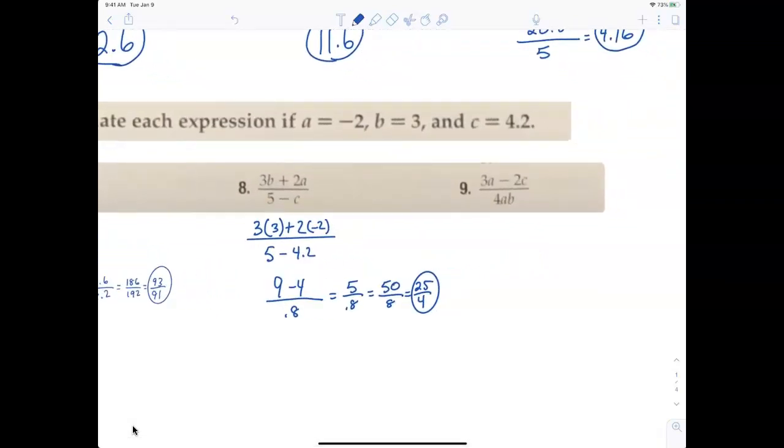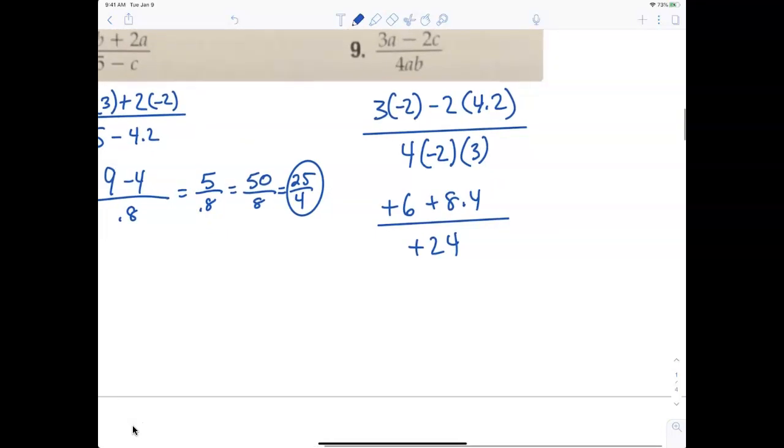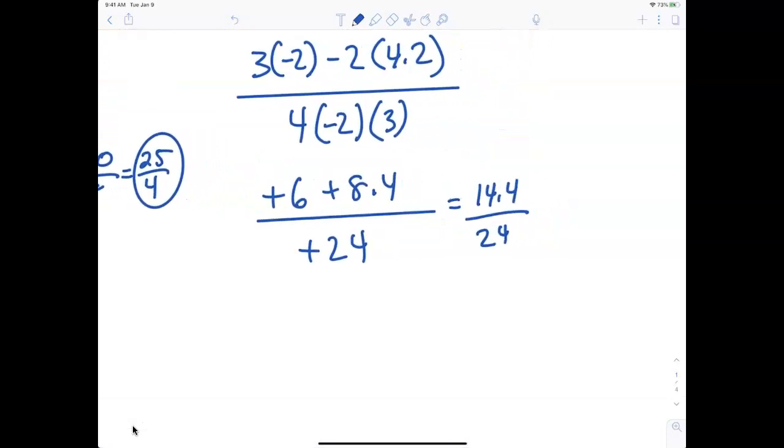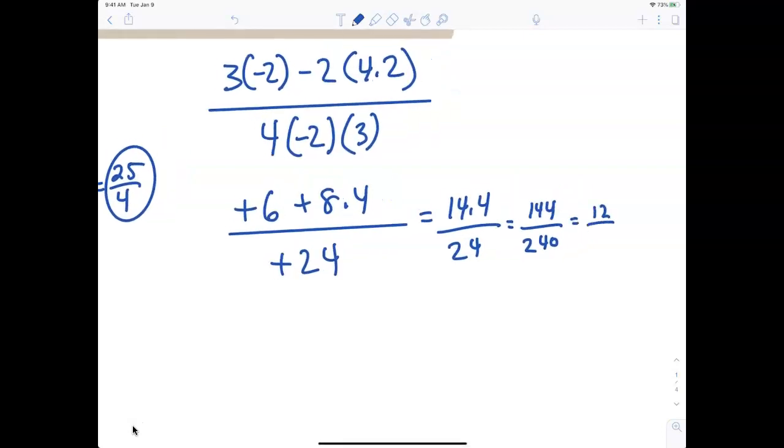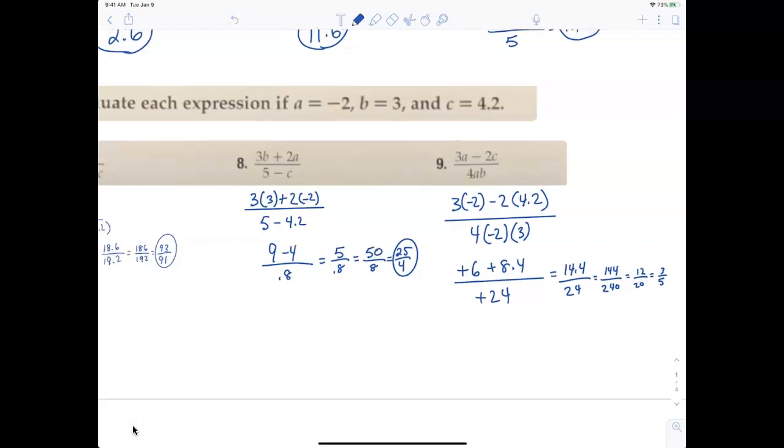Number 9: 3 times negative 2 minus 2 times 4.2 over 4 times negative 2 times 3. Let's simplify that. Negative 6 minus 8.4 over negative 8 times 3, negative 24. The easiest thing to do is just make them all positive, then you don't have to worry about it. So I end up with 14.4 over 24, which is a little bit annoying. Let's move this over to 144 over 240, then we can divide by 12, 12 over 20, then we can divide by 4, we get 3 over 5. Hopefully you're understanding what I'm doing as far as my reducing. That's just a really good review of how to simplify fractions.